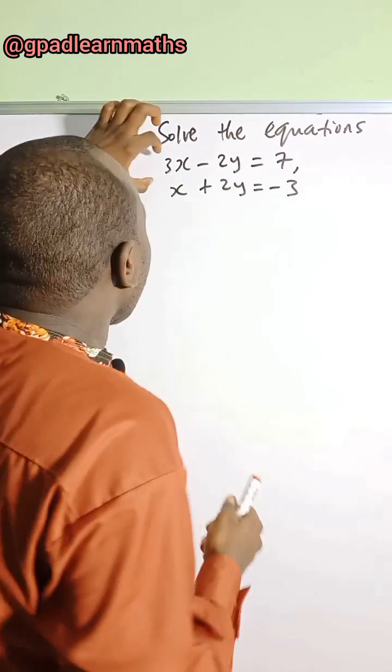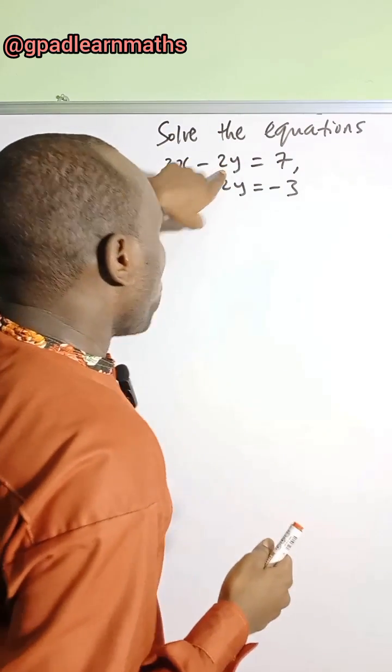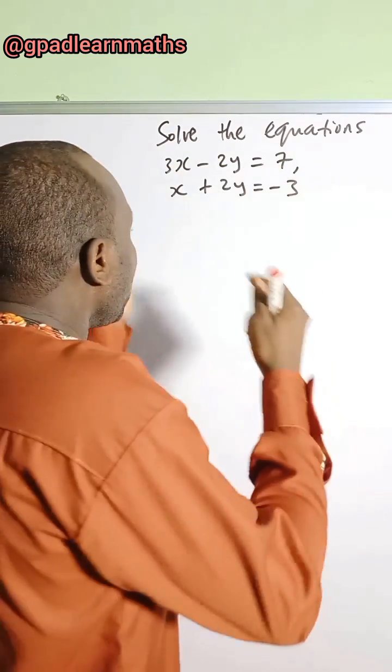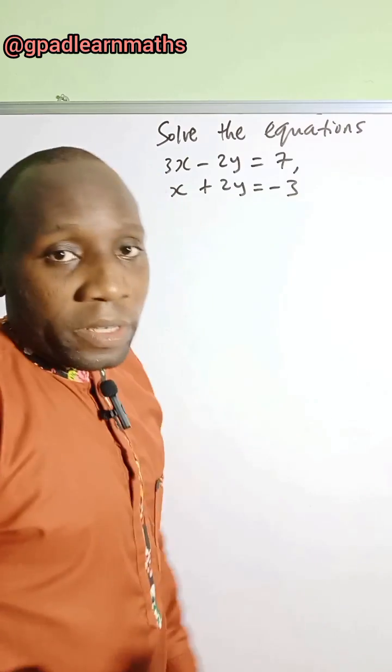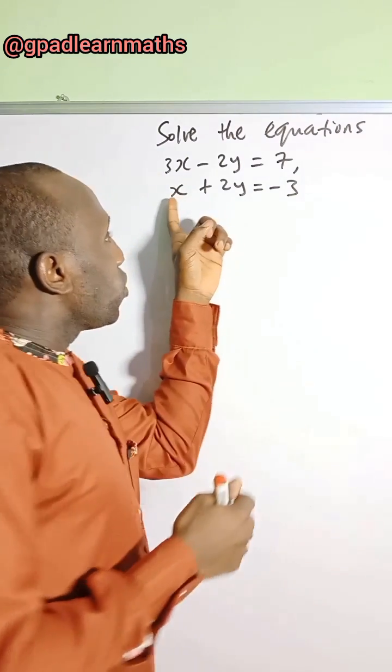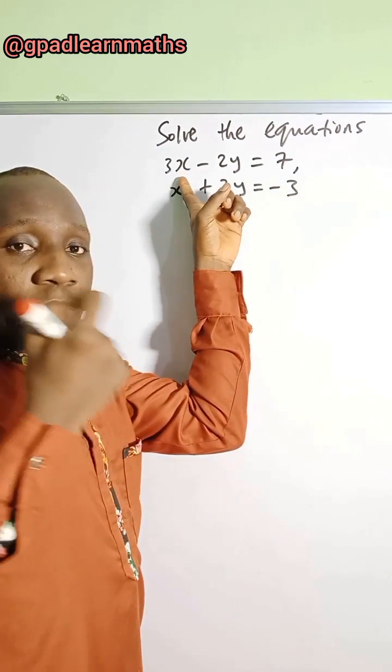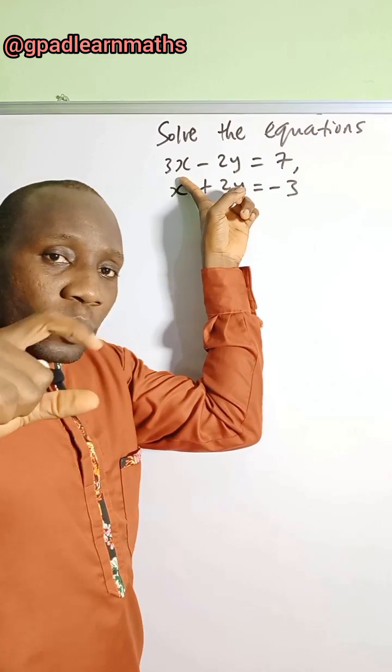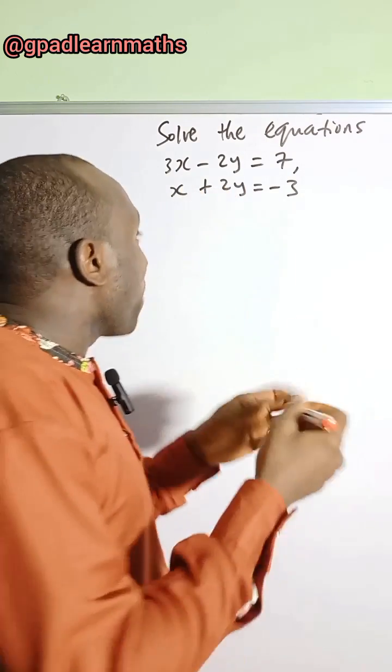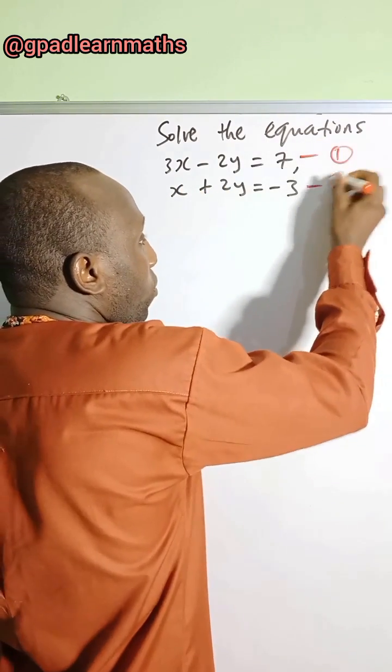So how am I going to do that? Look at the first equation, 3x minus 2y is equal to 7. And the second equation is x plus 2y is equal to minus 3. So I'm going to replace or substitute x for an expression in y. Let me call this equation 1 and this equation 2.